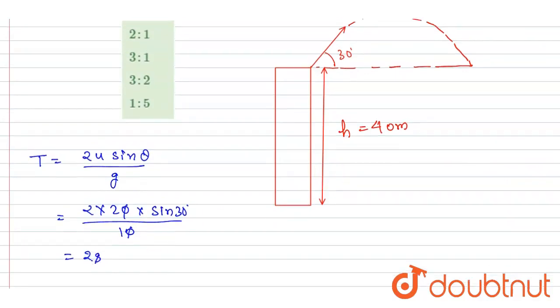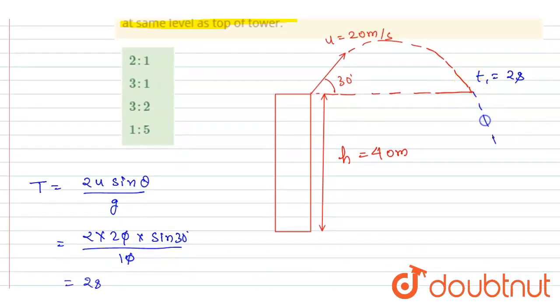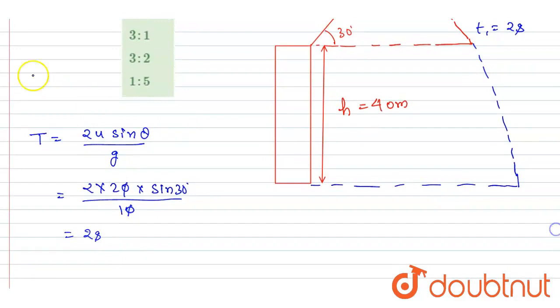To reach here at t equals 2 seconds, t₁ is 2 seconds. Now let's say it hits the ground after some time. You can get this by writing the second equation of motion in vertical direction.